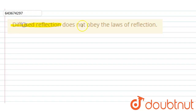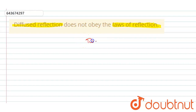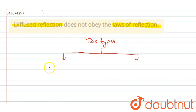The question is: does diffused reflection obey the law of reflection? First, let us know how many kinds of reflection there are. There are two types of reflection: regular reflection and diffused reflection.